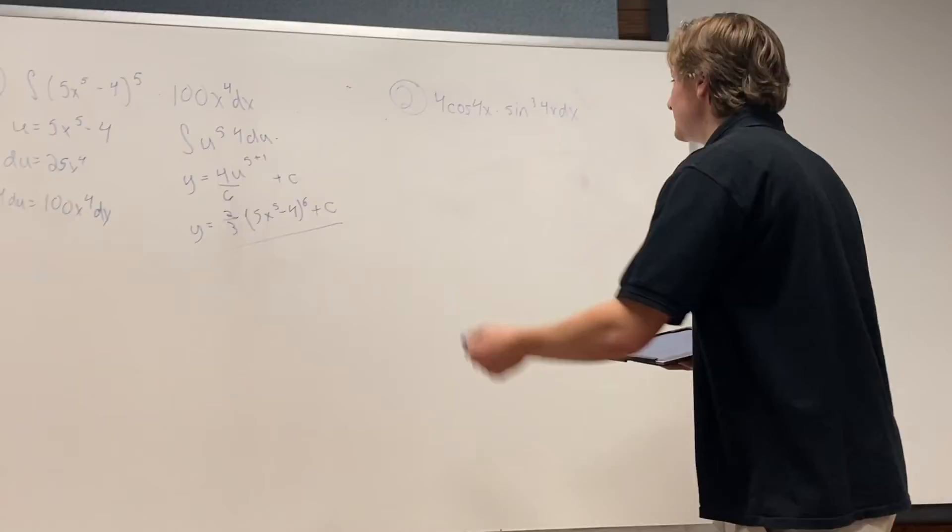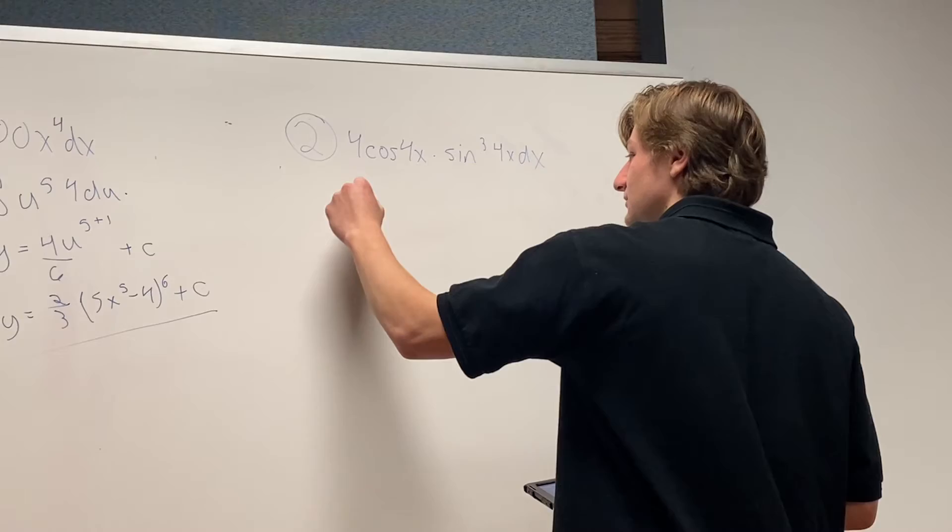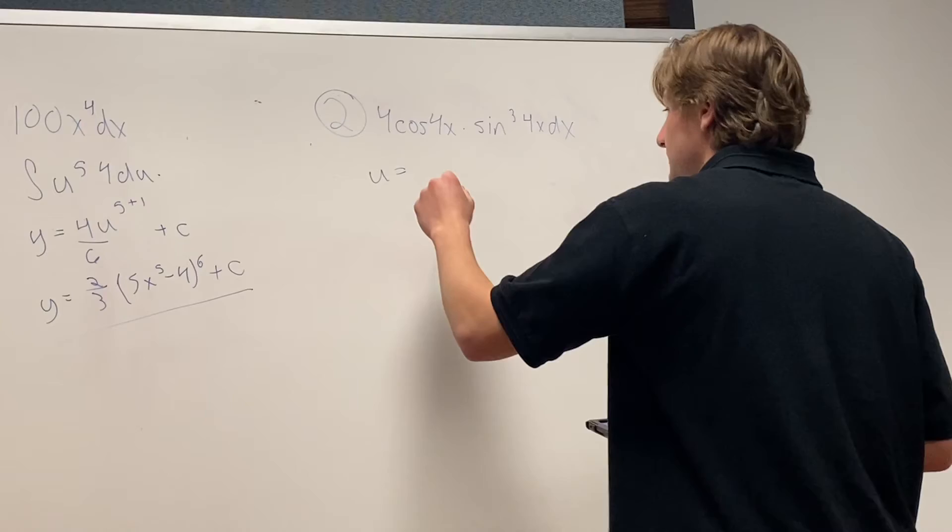Alright, so we're going to do one more, but this one's a little trickier with trig. You substitute it with trig, but I think you're smart enough. Trig doesn't faze me one bit. So what's our first step here? The u is going to be sine 4x. Very good.